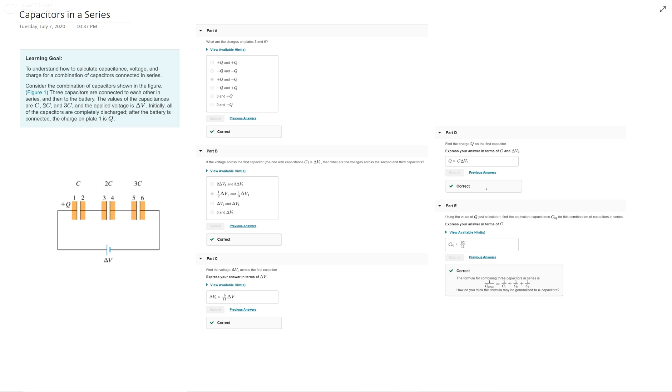All right, so we are now looking at this question called capacitors in a series. In it, they gave us this diagram and you see three capacitors with their charges C, 2C, 3C. Their individual things are labeled 1 through 6. We see a single charge labeled with a plus Q. We have a voltage and then it tells us that the applied voltage is delta V and the charge on plate 1 is Q. So it goes ahead and says that again.